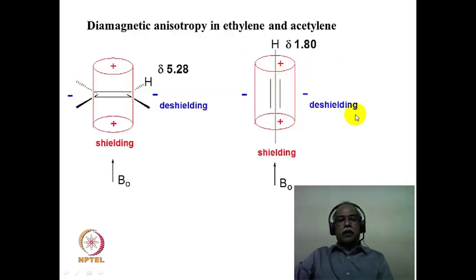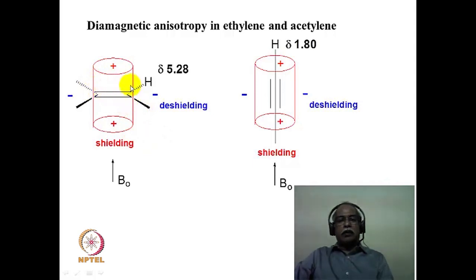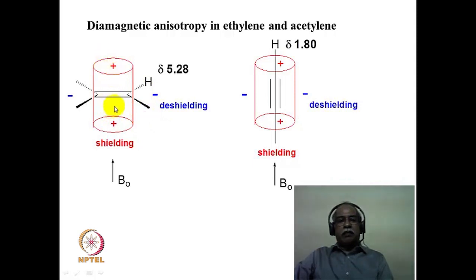Consider a double bond where the plane of the ethylene molecule is perpendicular to the externally applied magnetic field. The induced magnetic field due to the pi electrons has an anisotropic effect such that the area within the cylinder shown — above and below the pi bond — is a shielding zone, whereas the area away from the cylinder is a deshielding zone. Hydrogens in the red shielded area will be highly shielded, while hydrogens away from it will be highly deshielded. The ethylene hydrogens typically appear around 5.8 ppm, which is the actual chemical shift value of the hydrogens in the ethylene molecule.